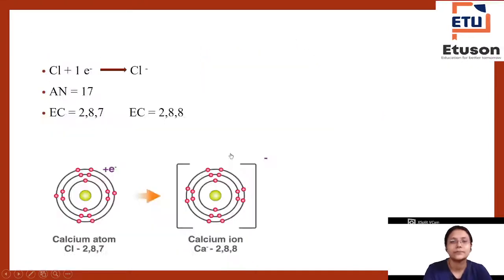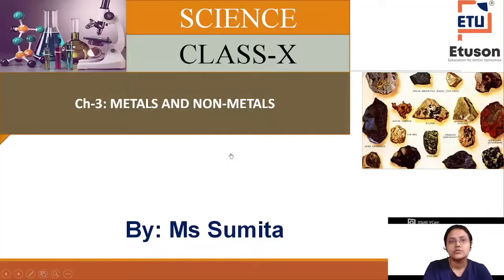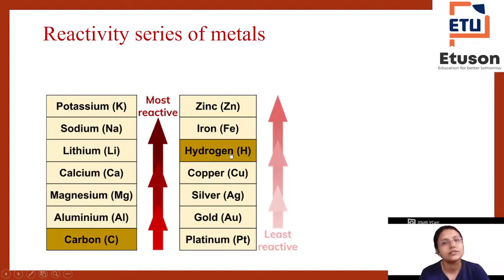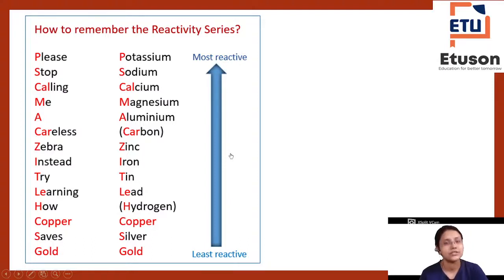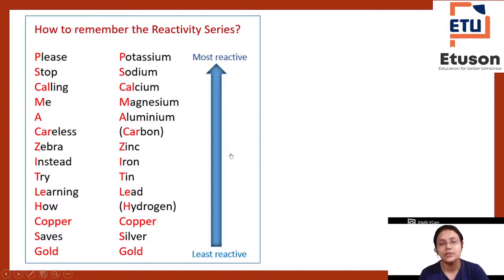So in summary: we learned the reactivity series of metals — which metal is more reactive. You write it in decreasing order, from most to least reactive. You can remember it through the mnemonic 'Please Stop Calling Me A Careless Zebra, Instead Try Learning How Copper Saves Gold.' The most reactive is potassium and sodium — that's why they are stored in kerosene, because if they contact atmospheric oxygen they will catch fire.